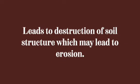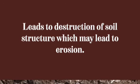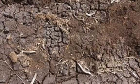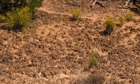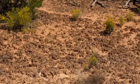Crop rotation also leads to the destruction of soil structure, which may lead to erosion. Because of continuous cropping of the different plots, it leads to encrustation — the soil turns into a crust — which can in turn lead to soil erosion and the destruction of soil structure.